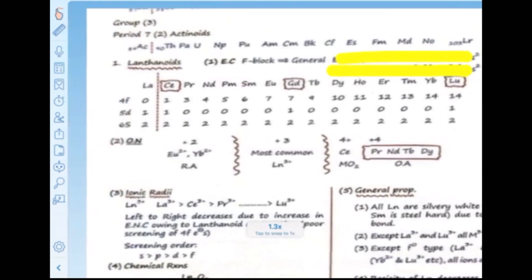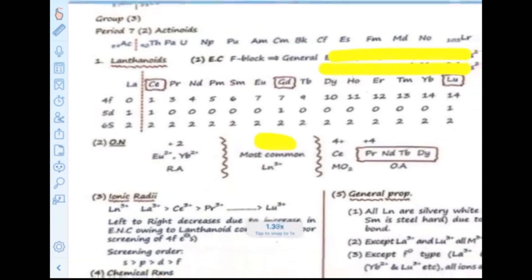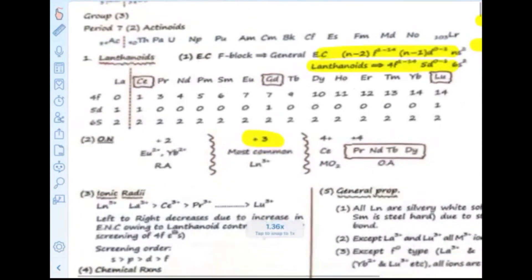The most common oxidation state of the lanthanoid series is +3. However, there are exceptions when filling the general formula.